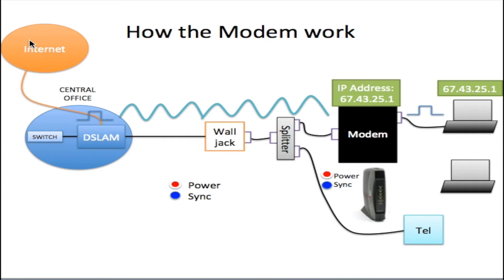The internet sends out a digital signal to the DSLAM — the Digital Subscriber Line Access Multiplexer. This digital signal is converted from a digital signal to an analog signal. The signal coming from your telephone switch is also an analog signal, so the two signals are multiplexed together, then modulated and sent across the telephone line as one modulated signal carrying both your telephone and your internet information.